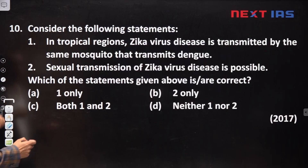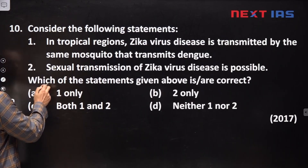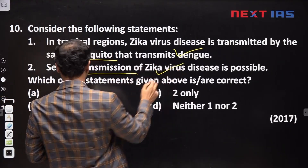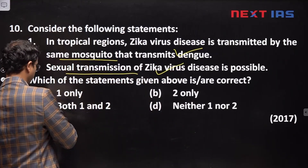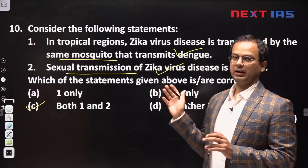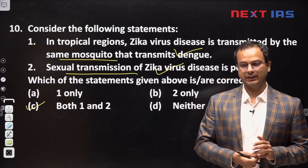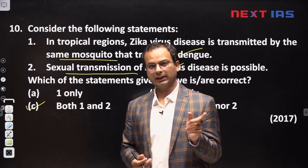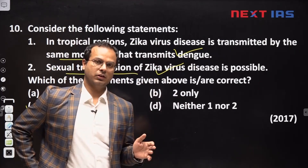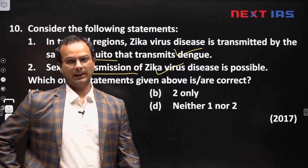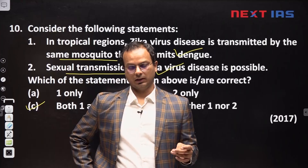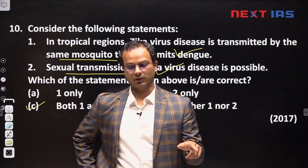The next question is about Zika virus. Zika virus is transmitted by the same mosquito as Dengue — this is correct. Sexual transmission of Zika virus is also possible — this is correct. So both statements are true. This question is again related to the Aedes aegypti mosquito, which is considered one of the most dangerous mosquitoes. It spreads Dengue, Chikungunya, Zika virus, and Yellow Fever — all four diseases are spread by the same mosquito.